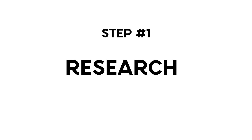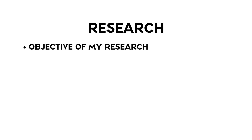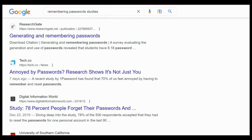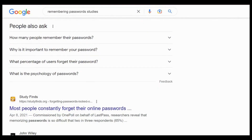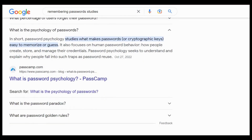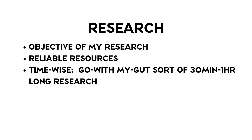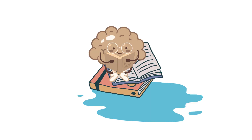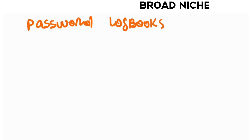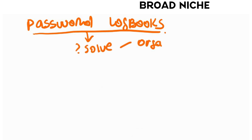Step number one: research. After I've selected a niche in which I want to make a book, I will do research with the goal of finding out what needs and problems the book I am creating might solve, or the potential benefits it may bring. I'll usually look for reliable resources — two or more studies, articles, or blog posts that confirm the benefits this type of book could provide. This research is done in a disorganized, go-with-my-gut sort of way where I'll spend 30 minutes to an hour going down the rabbit hole, soaking up information until I feel I've gathered enough. The broad niche I chose for today's session is password logbooks, and after doing some research, I found that the problems this type of book could potentially solve are related to organization and the fragility of human memory.